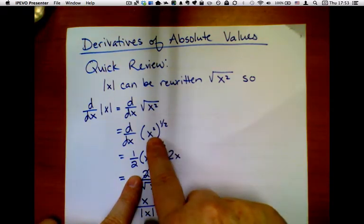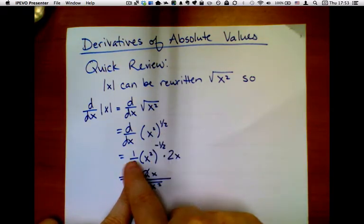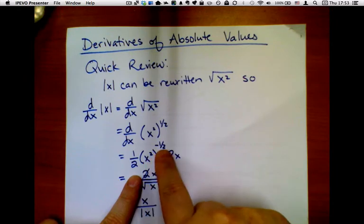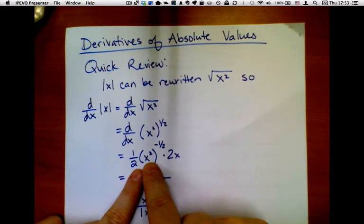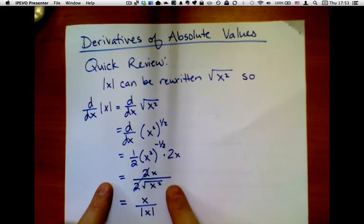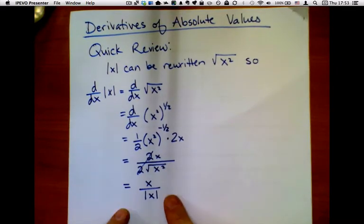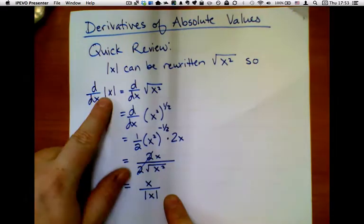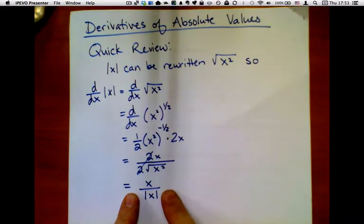So the derivative of anything to the one-half is one-half stuff to the negative one-half, and then you take the derivative of the inside. The derivative of x squared is 2x, and then you do a little cleanup and you get the derivative of the absolute value of x is equal to x over the absolute value of x.